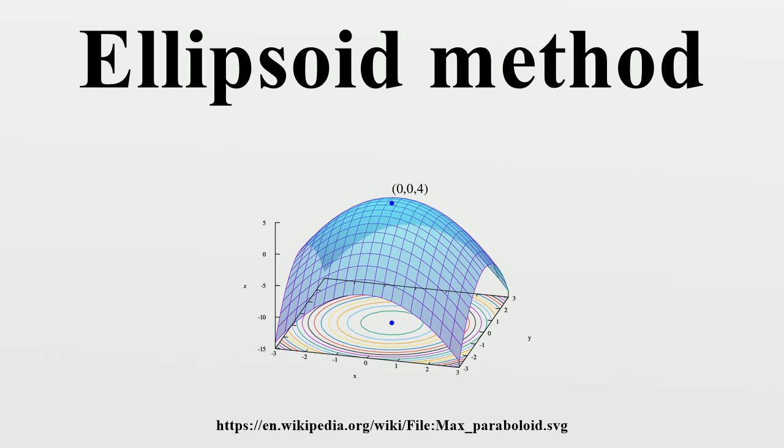However, the ellipsoid algorithm allows complexity theorists to achieve bounds that depend on the dimension of the problem and on the size of the data, but not on the number of rows. So it remained important in combinatorial optimization theory for many decades. Only in the 21st century have interior point algorithms with similar complexity properties appeared.